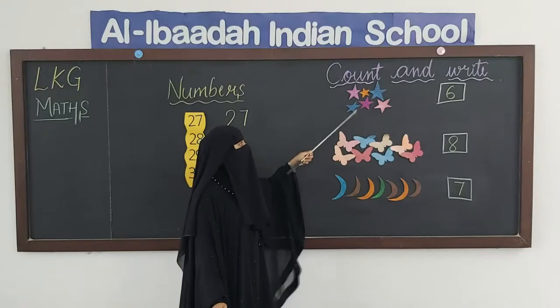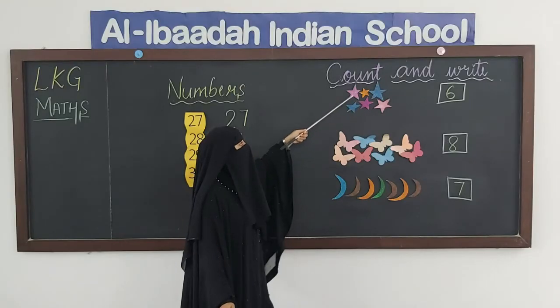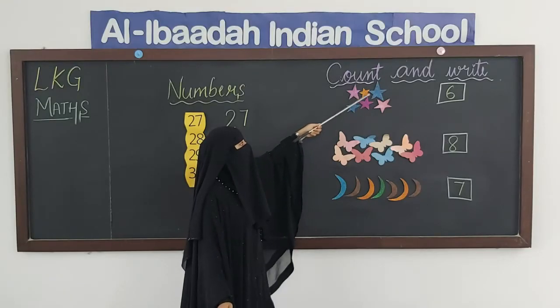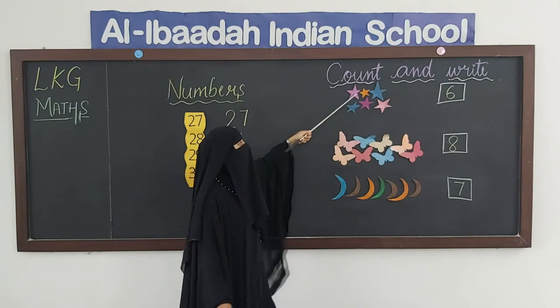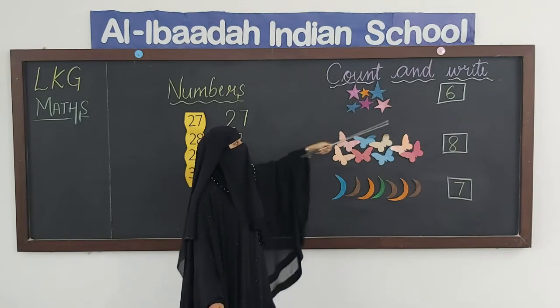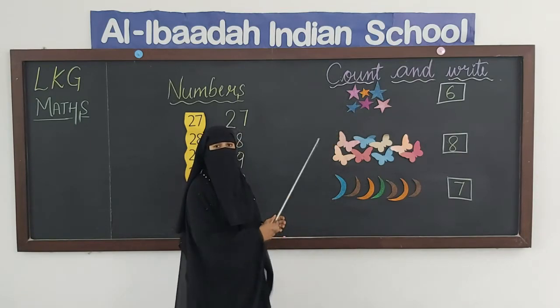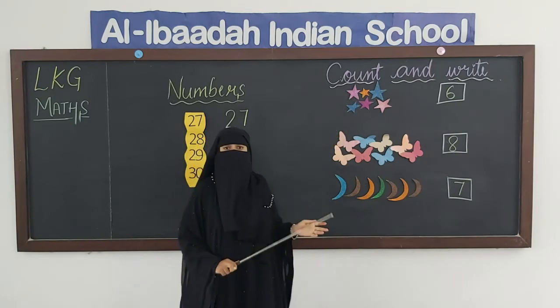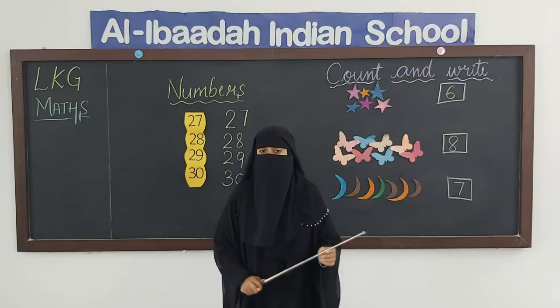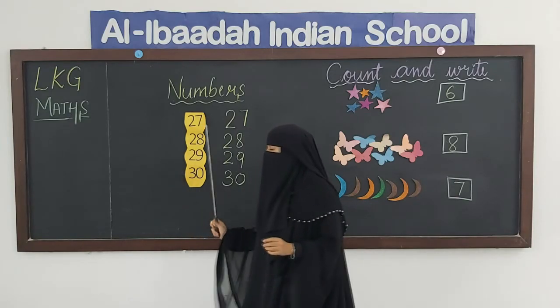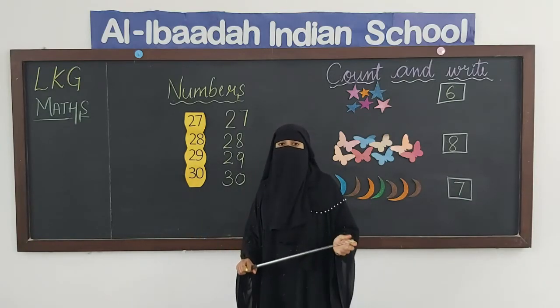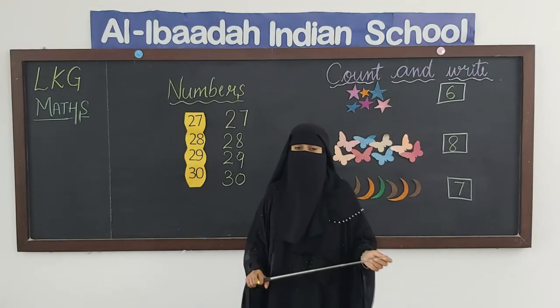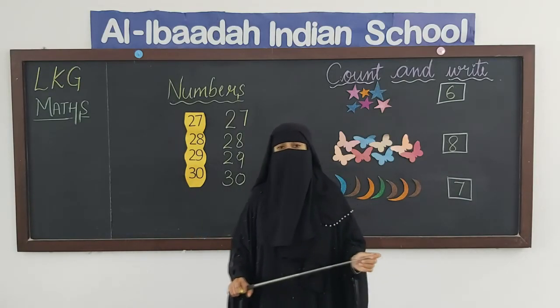You have to count each single object here — single stars — and you will get the numbers. You have to practice this count and write activity, as well as the numbers. We will meet again in the next video class.